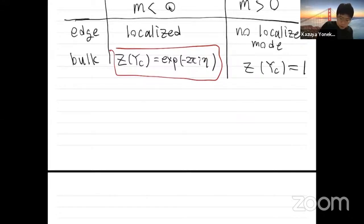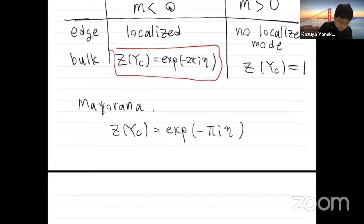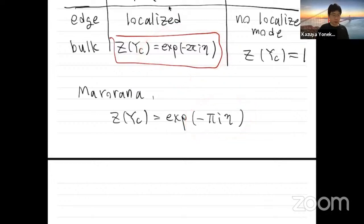This is the general formula for anomalies of fermions. For Majorana fermions, it is just one half of the Dirac case — instead of exp(−2πi η), we get exp(−πi η). In this way, we get this general formula for fermion anomalies.